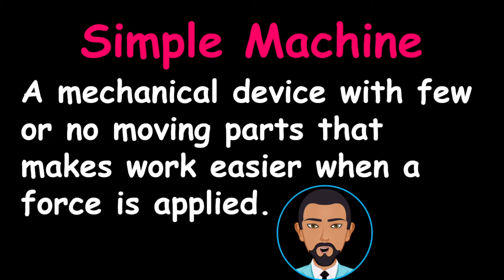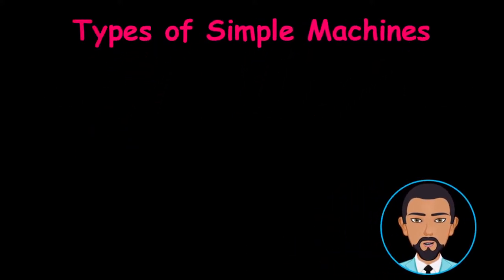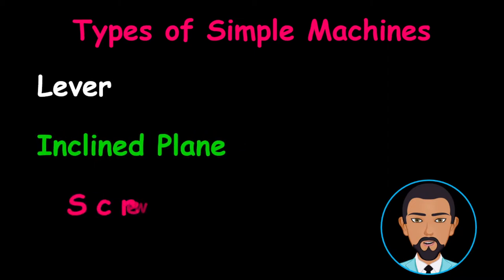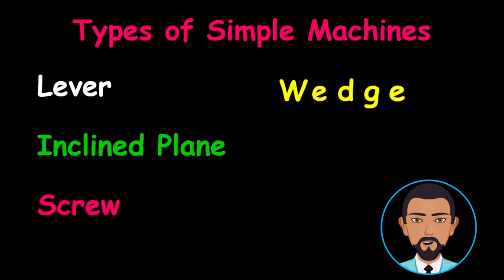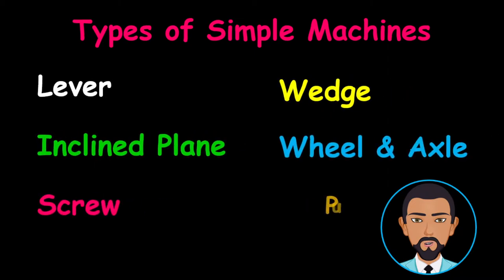Let us now look at the types of simple machines. I am sure you have used some of these already, or at least seen some of them around your house or community. Simple machines include lever, inclined plane, screw, wedge, wheel and axle, and pulley.